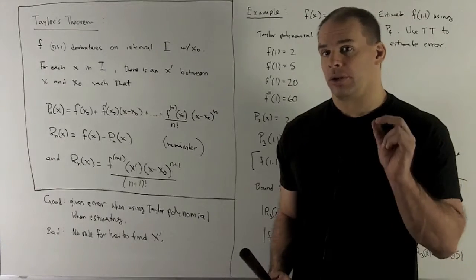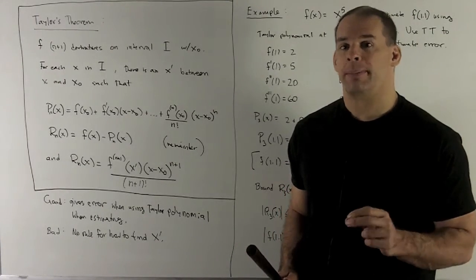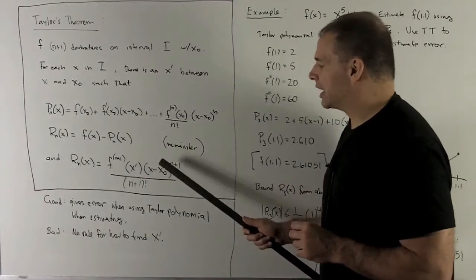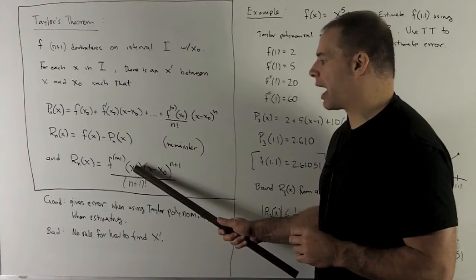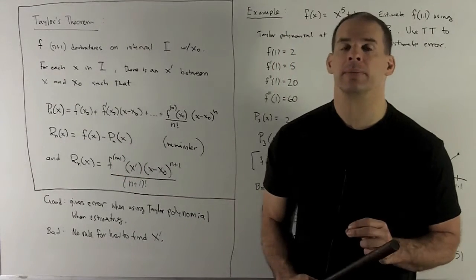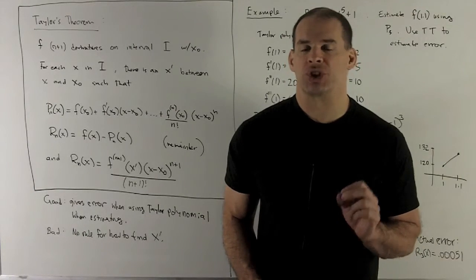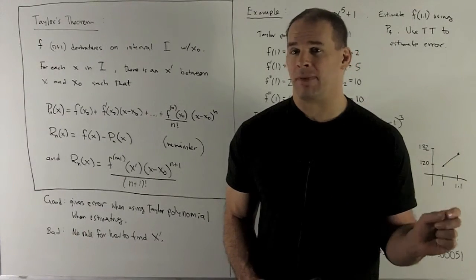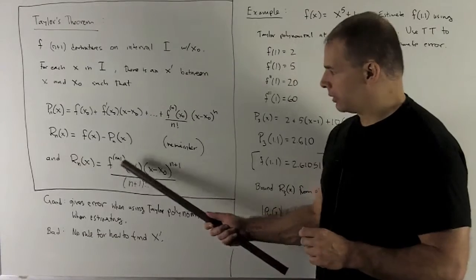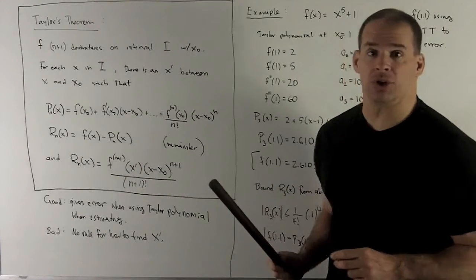Good thing about this, we've got a method for estimating errors. Bad thing, it really doesn't give us any idea how to find this x', it just tells us that's between x and x₀. So, in practice, what's going to happen is, you're not going to try to find your x', you're just going to take the maximum of all of those points evaluated in your (n+1)st derivative.